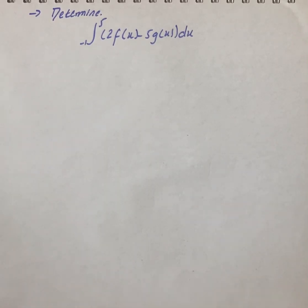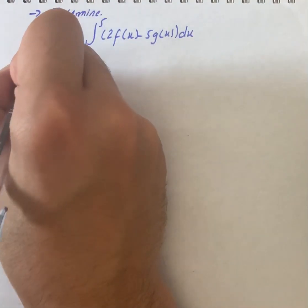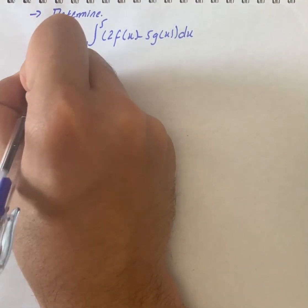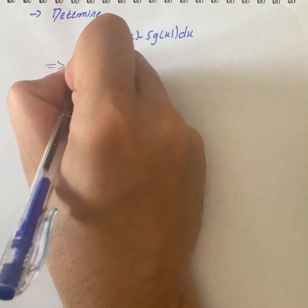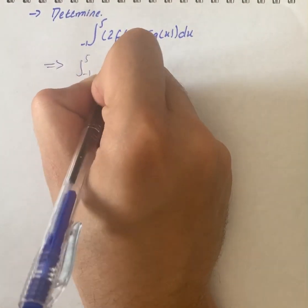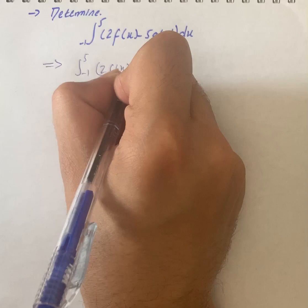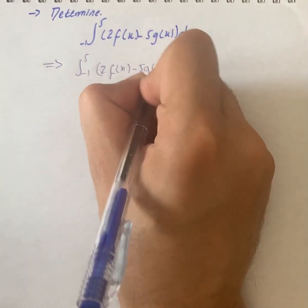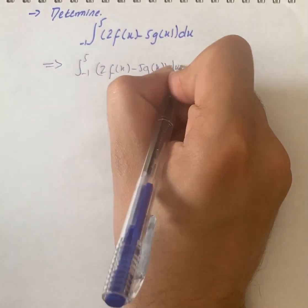Here we have a situation with an integral to determine. So first of all, we will use the difference rule. We will have ∫[1,5] (2f(x) - 5g(x))dx, that is equal to 2∫f(x)dx - 5∫g(x)dx.